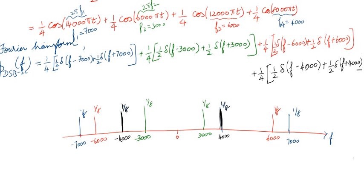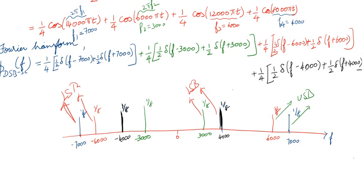For the upper sideband and lower sideband identification: 6000 Hz and 7000 Hz are the upper sidebands (USB), and 3000 Hz and 4000 Hz are the lower sidebands (LSB). The amplitude for all frequencies is 1/8.